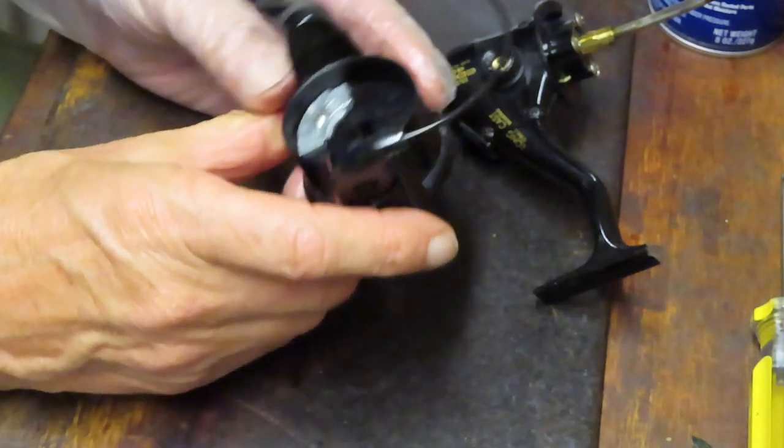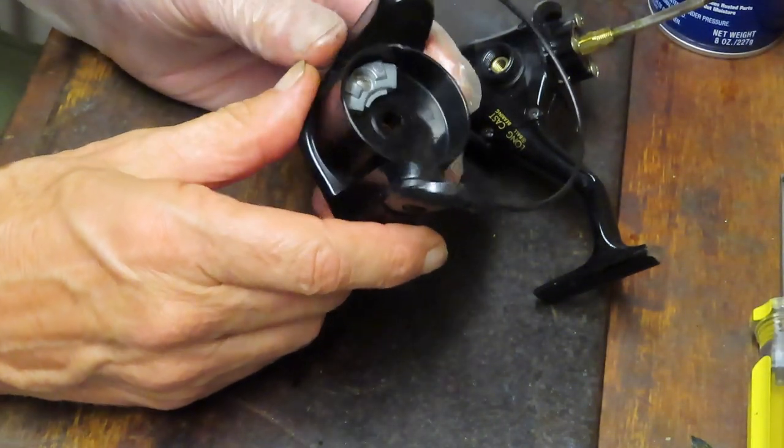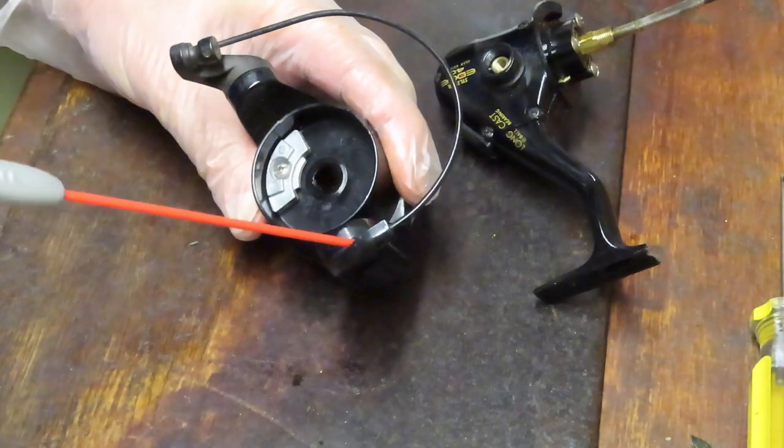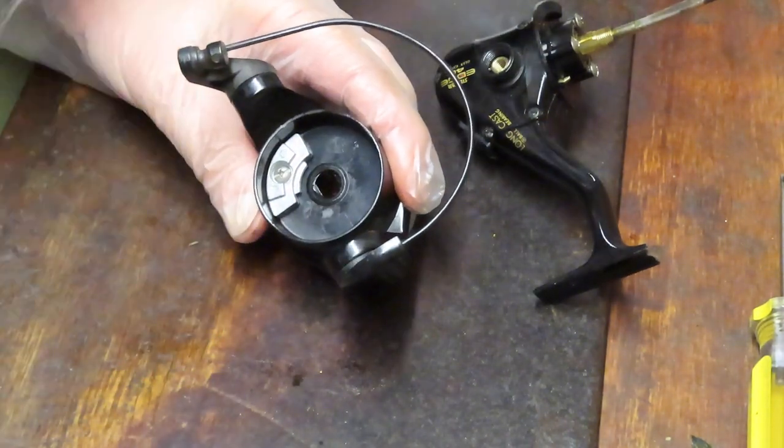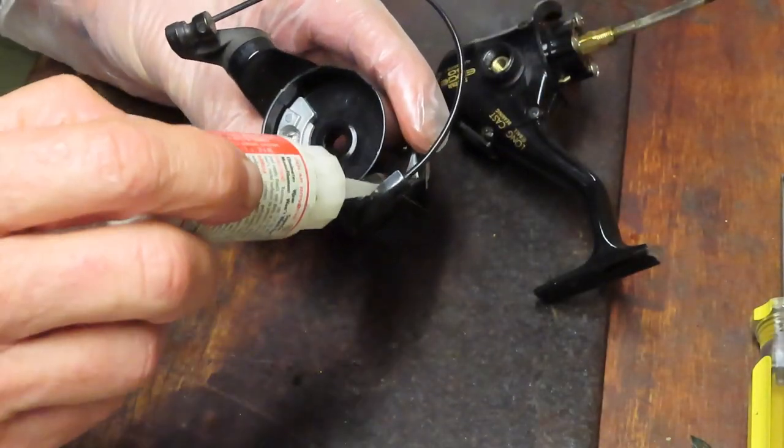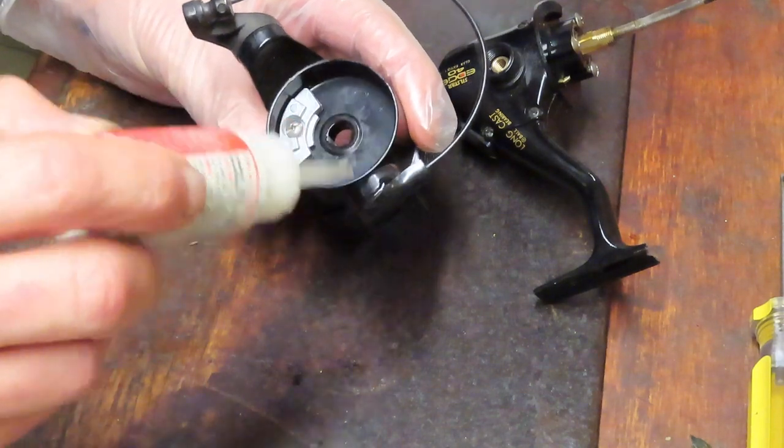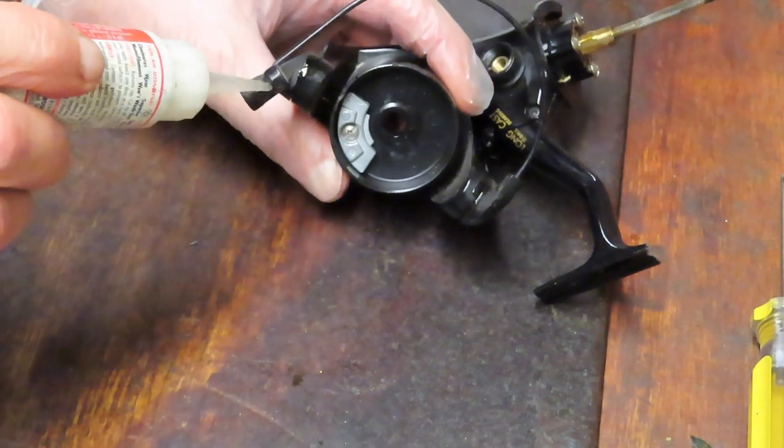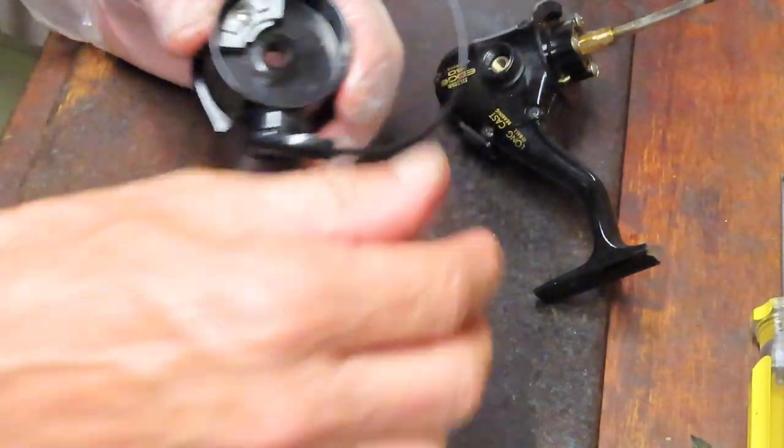So that reminds me to tell folks to take pictures along the way of what you're removing and a sequence of them that will help you when you go to reassemble the reel. I'm just going to put a little bit of oil onto the junctures where the bail meets the rotor case.